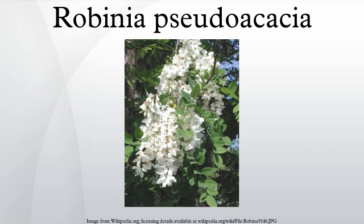Description. With a trunk up to 0.8 m diameter, with thick, deeply furrowed blackish bark. The leaves are 10–25 cm long, pinnate with 9–19 oval leaflets, 2–5 cm long and 1.5–3 cm broad. Each leaf usually has a pair of short spines at the base, 1–2 cm long, or absent on adult crown shoots, up to 2 cm long on vigorous young plants. The intensely fragrant flowers are white to lavender or purple, borne in pendulous racemes 8–20 cm long, and are edible. The fruit is a legume 5–10 cm long, containing 4–10 seeds. Although similar in general appearance to the honey locust, it lacks that tree's characteristic long branched thorns on the trunk, instead having the pairs of short spines at the base of each leaf.